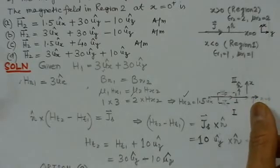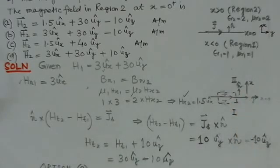So H_t2, the tangential part for the second boundary, is H_t1, the tangential part of the first boundary, plus 10u_z. H_t1 tangential part is 30u_y, and this is -10u_z.